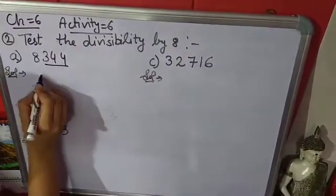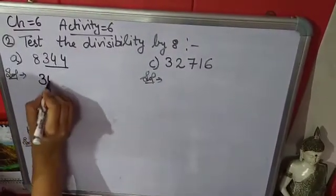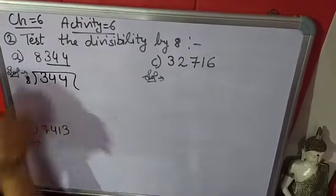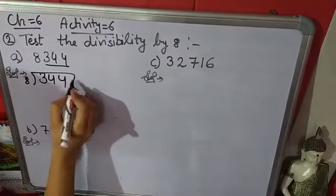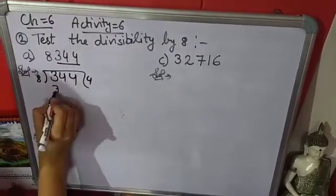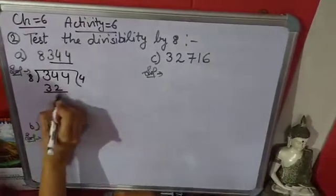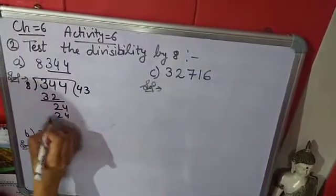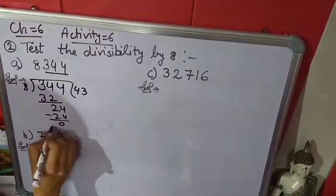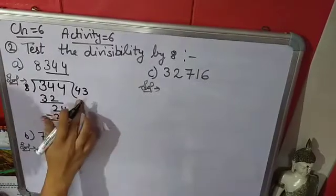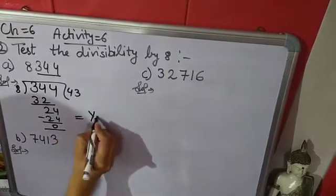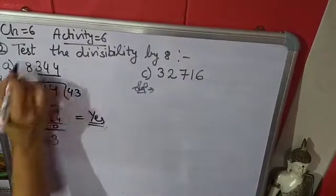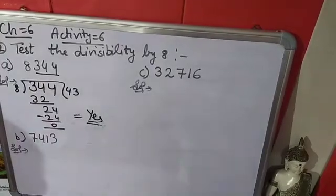We will take the last 3 digits — 344 — and check if it is divisible by 8 or not. It is divisible by 8, so yes, this complete number is divisible by 8 also.